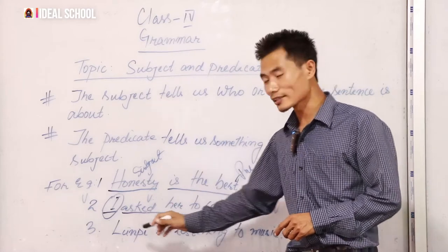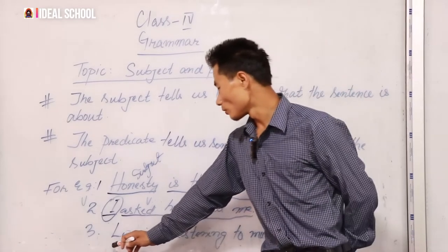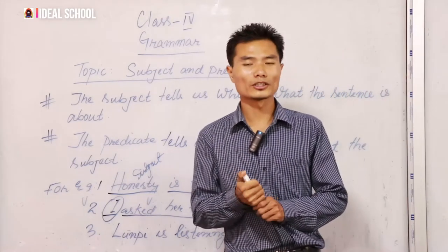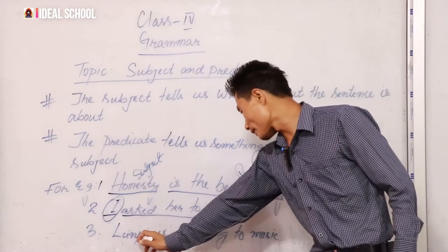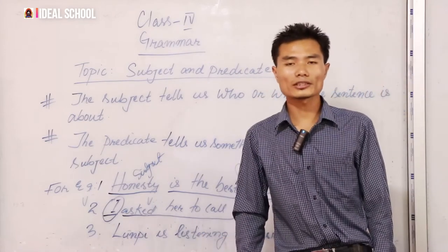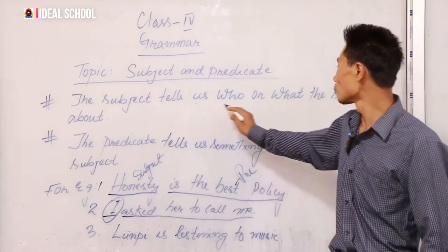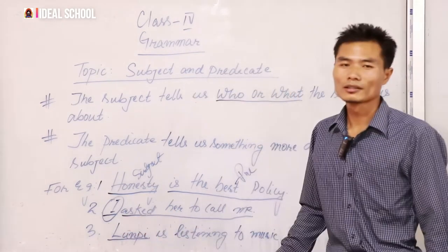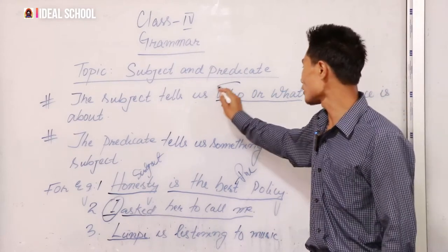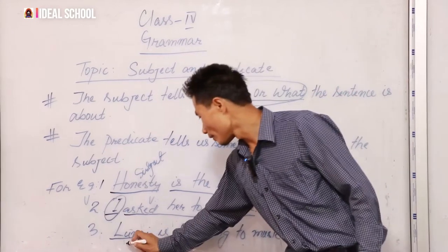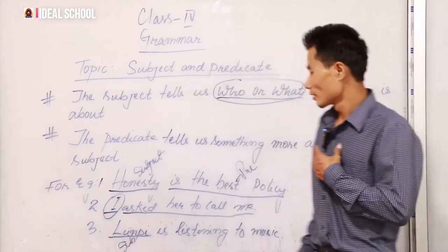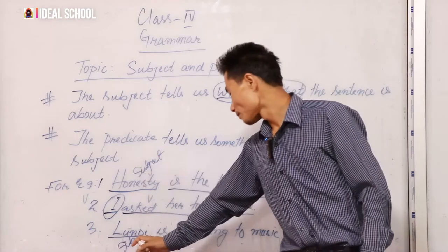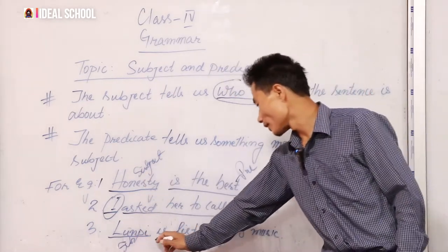Now let us underline what is subject and what is predicate. 'Lumpy is listening to music' — what is Lumpy? Lumpy is a human being, and that is why, for who or what, Lumpy will be the subject. It tells us who or what — so Lumpy will be the subject. Don't get confused.